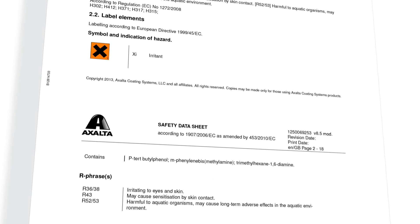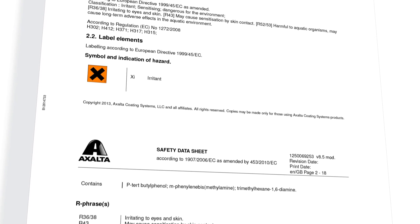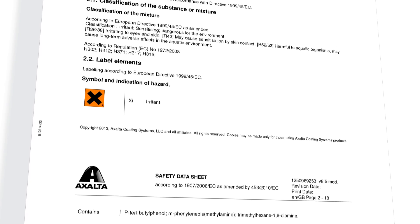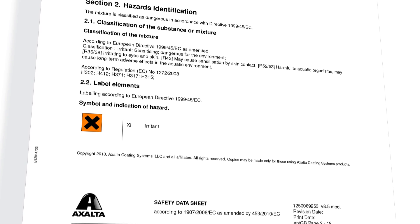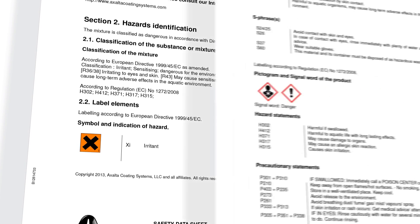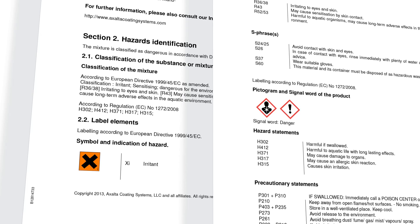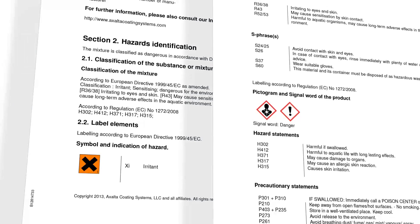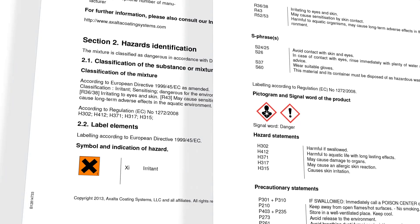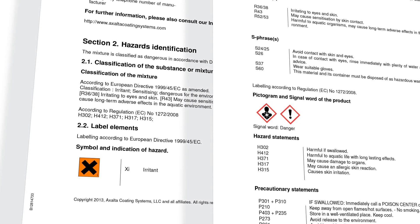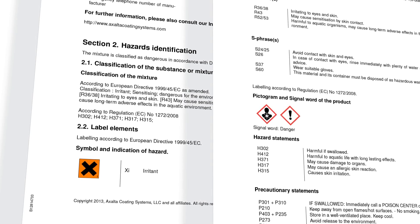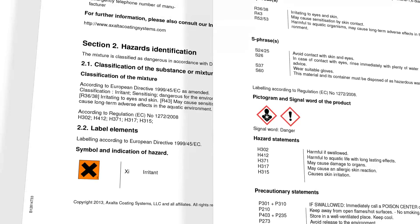The safety data sheets will be adjusted accordingly. During the transition period, ending in June 2015, the old and new hazard classification will be shown in Section 2. Now we will take a closer look at the important sections in the hazard identification.